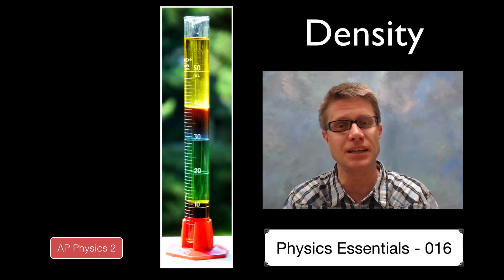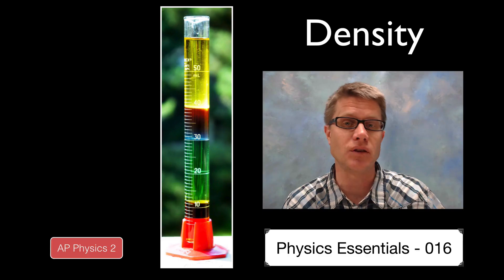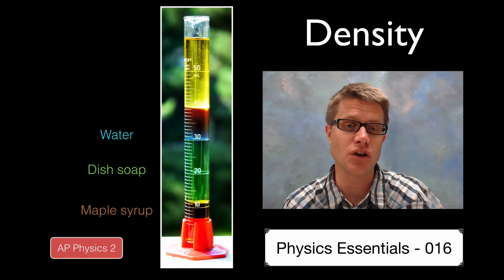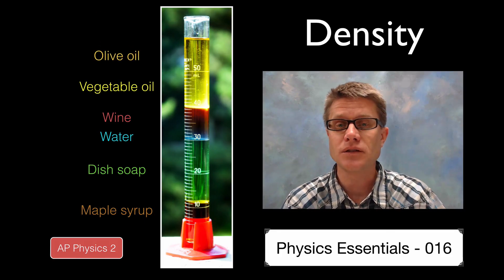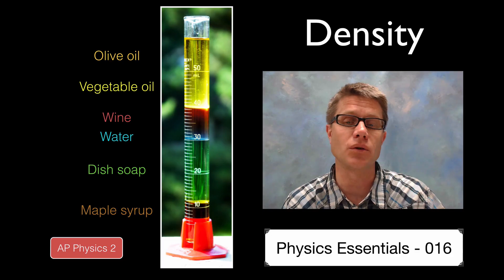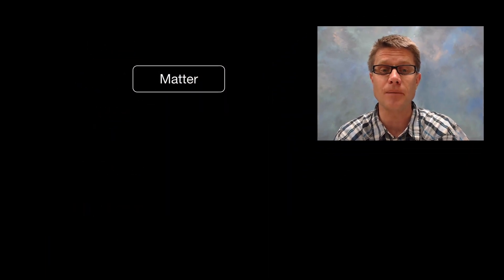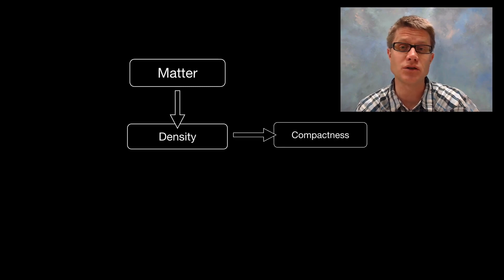Density is a measure of the compactness of matter. What we have here are a number of fluids that have different densities. At the bottom we have maple syrup, followed by dish soap and water and wine and vegetable oil and olive oil. The most dense material, the maple syrup, is at the bottom, and the least dense is the olive oil at the top. Matter has a property called density which measures the compactness of that matter.